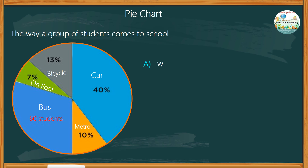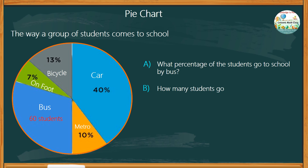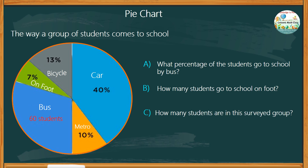Letter A: What percentage of the students go to school by bus? Letter B: How many students go to school on foot? Letter C: How many students are in this surveyed group? And Letter D: What fraction of the students go to school by metro? You can always pause this video and take as much time as you need.